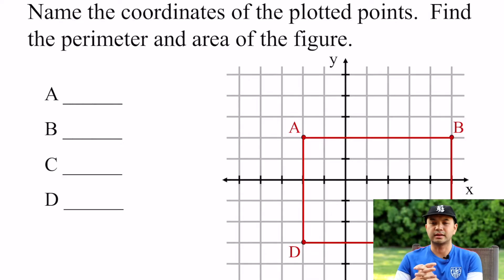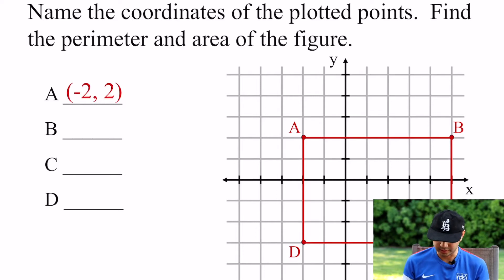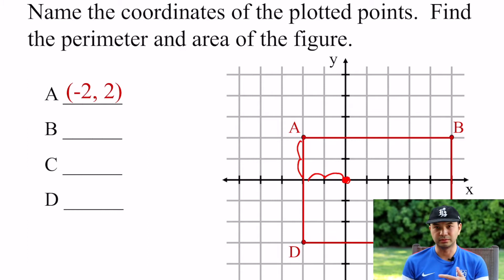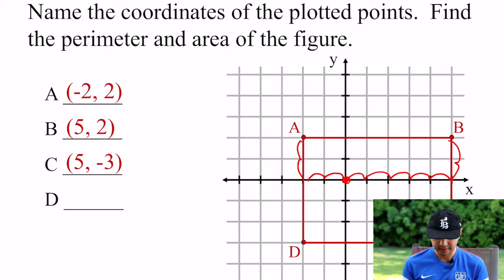So pulling this up here — this is a review from before when we learned how to plot points on the coordinate plane. Looking at each of these points, to find the point based on the coordinates, you count from the origin. X comes first, so for point A I went left twice — that's negative 2 — and up twice — positive 2. For B, go right 5 and up 2, so the ordered pair is (5, 2).